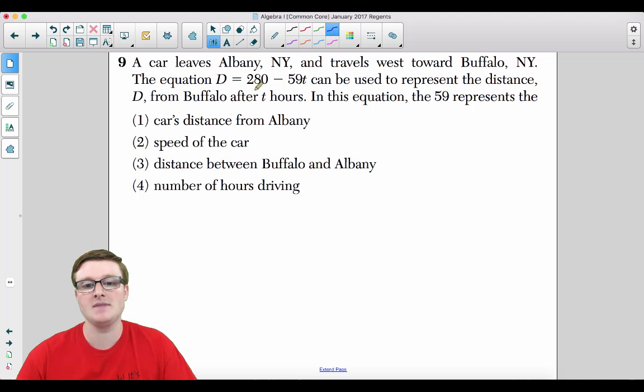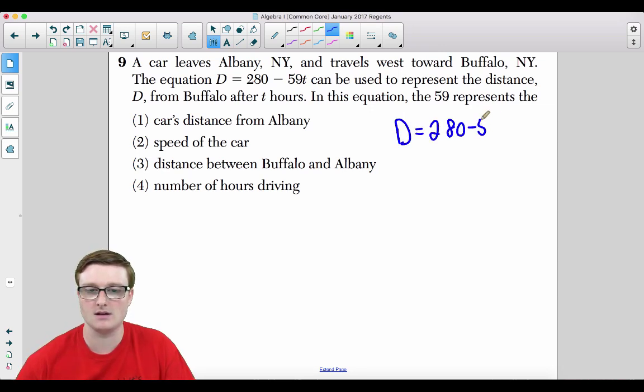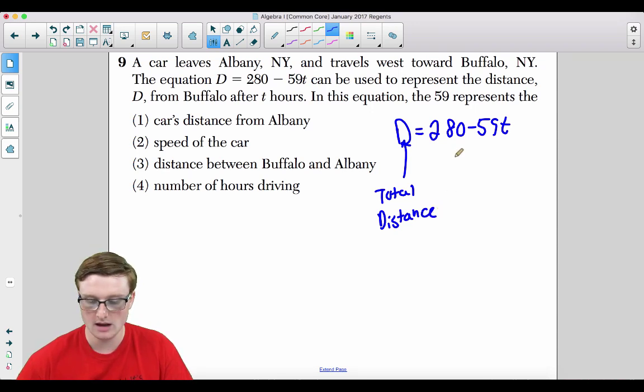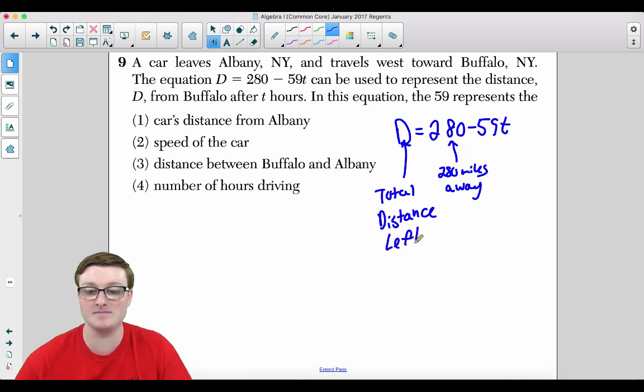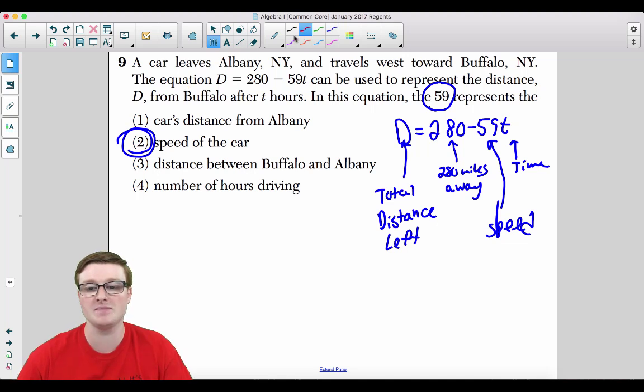Number 9. A car leaves Albany, New York, and travels west towards Buffalo, New York. The equation D = 280 - 59T can be used to represent the distance D from Buffalo after T hours. In this equation, 59 represents the what? D represents the total distance. 280 represents, well, this represents 280 miles away, meaning that Albany is 280 miles from Buffalo. So this is the total distance left remaining in the trip. T is in time. 59, or the negative 59, that is the speed that you were going. So 59 represents the speed of the car. That is going to be choice 2. You should take 280 miles minus 59 times T, which is in hours. That's miles per hour.